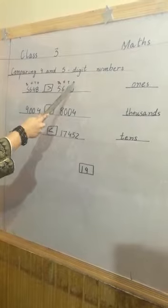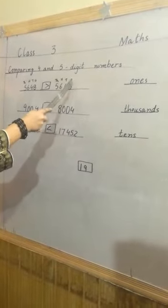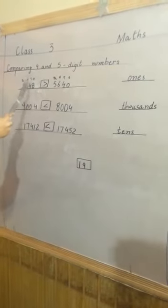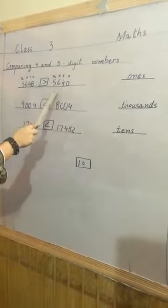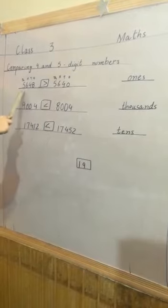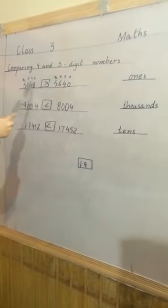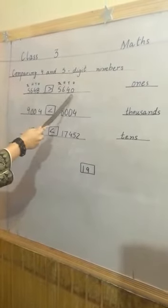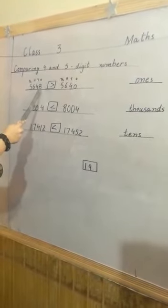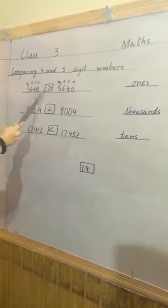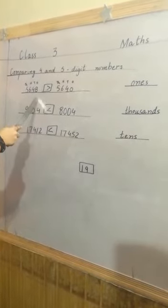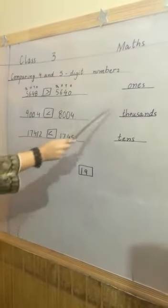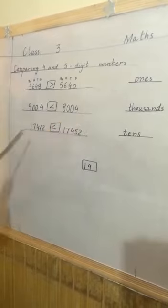Firstly, we see the number place value. 1 stands for ten thousand. Okay, which number is greater? 5, 5 same. 6, 6 same. 4, 4 same. 8, 0. Which one is greater? 8 is the greatest number. So 5, 6, 4, 8 is the greatest number. We compare once.